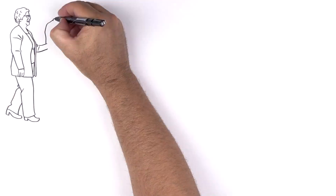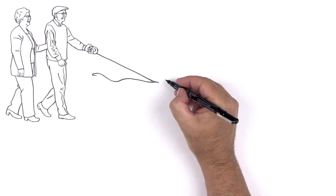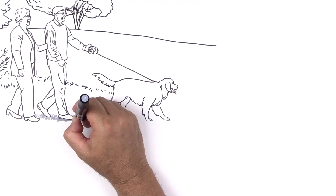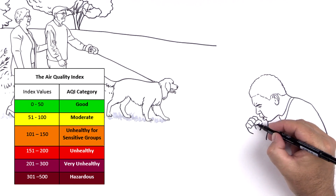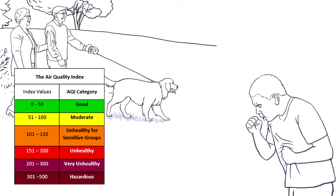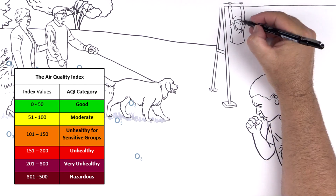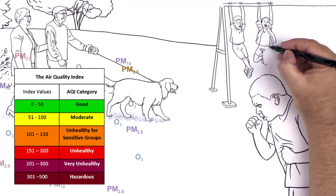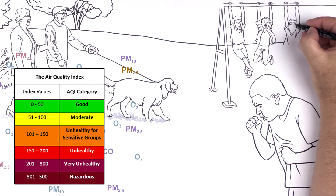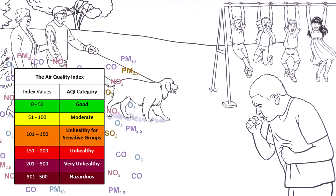EPA communicates information about outdoor air quality and health through the Air Quality Index, or AQI. It includes individual indices for the most common pollutants: ozone, fine and coarse particle pollution also known as PM2.5 and PM10, carbon monoxide, nitrogen dioxide, and sulfur dioxide.